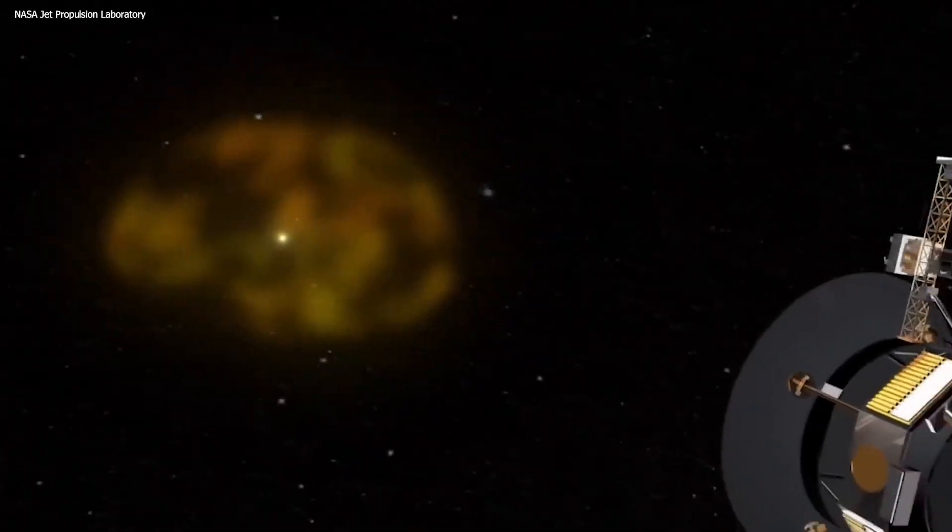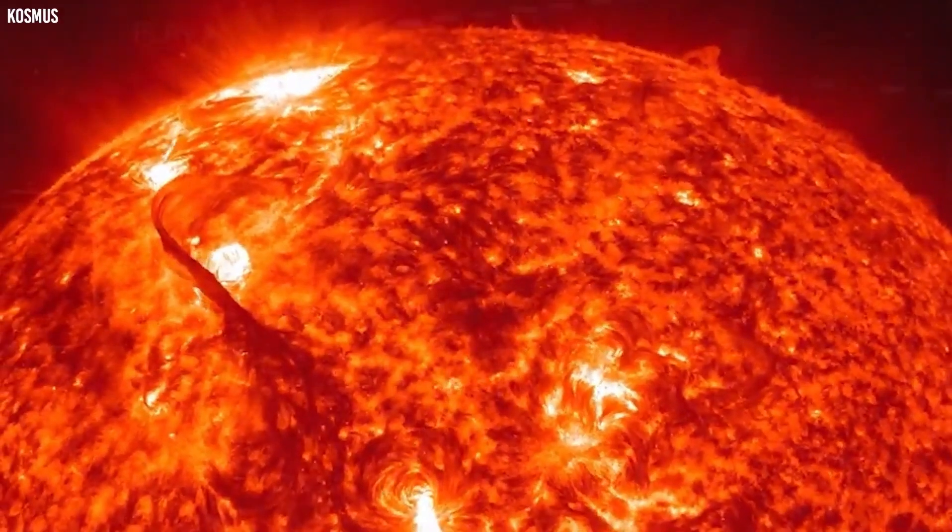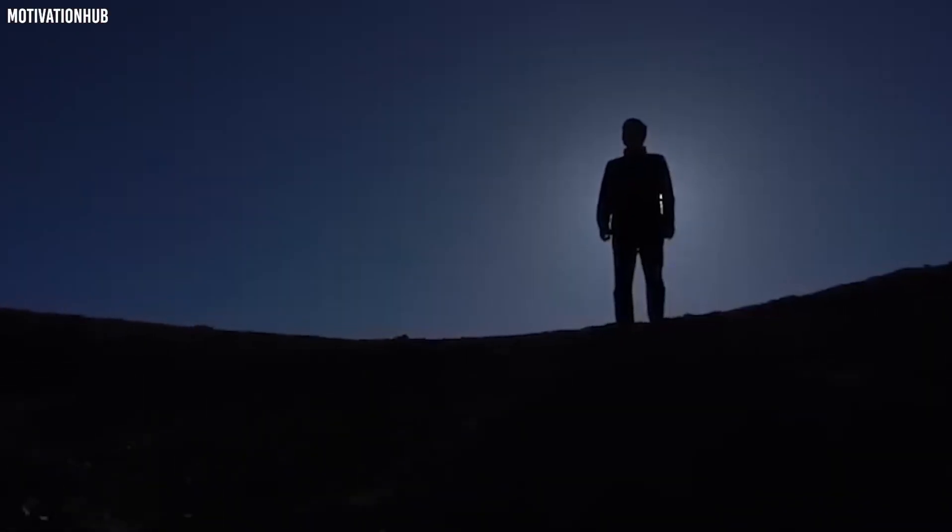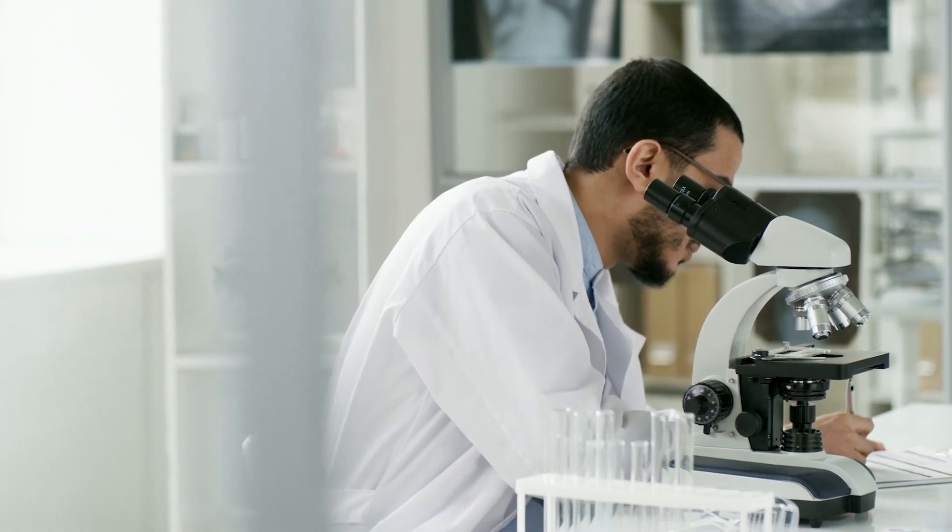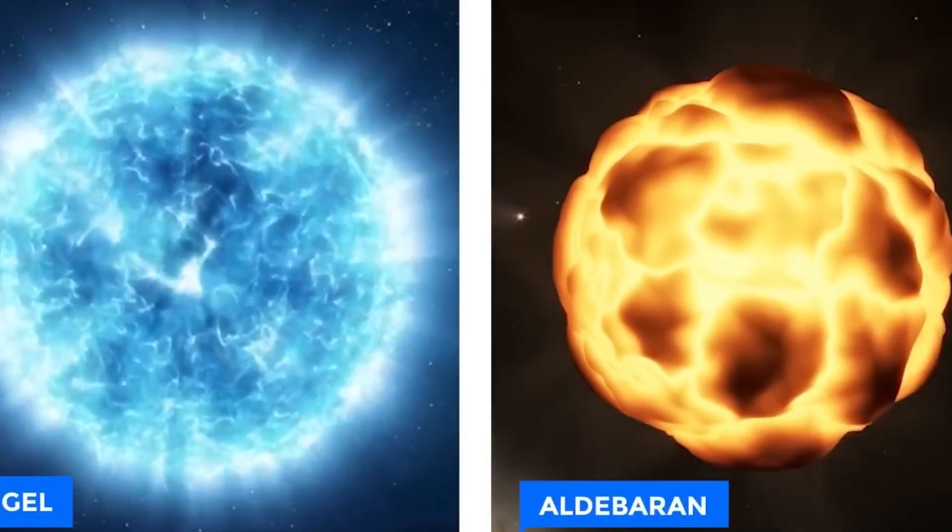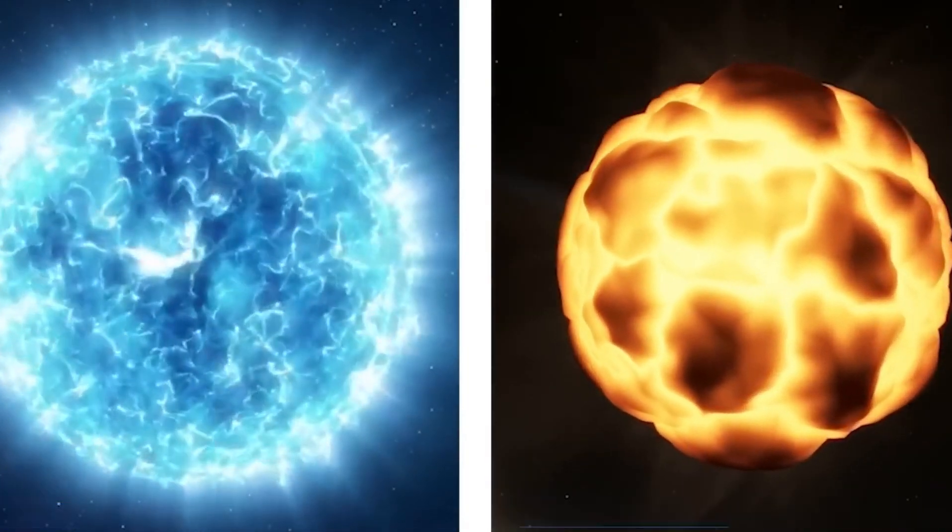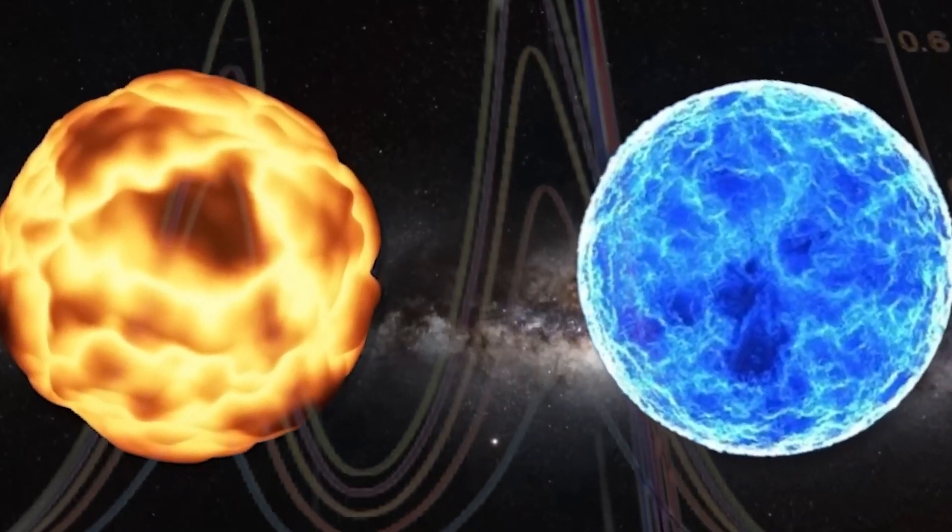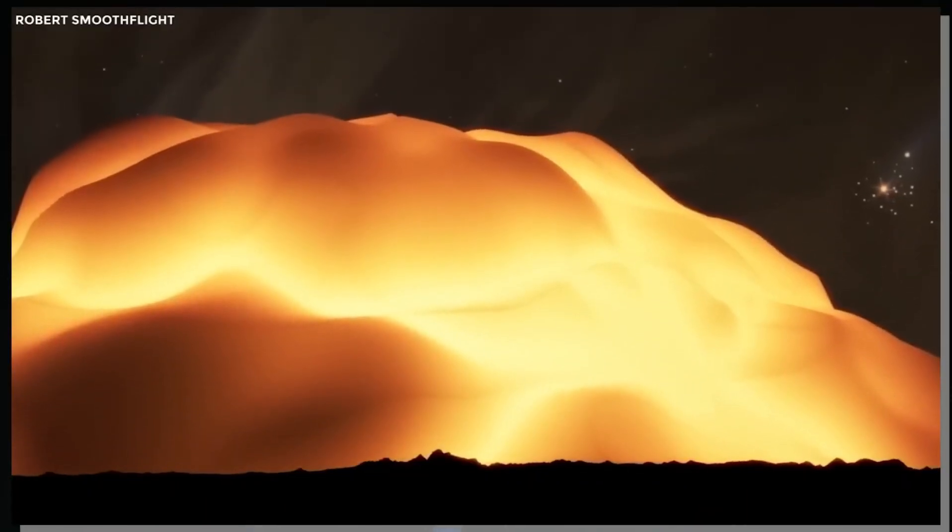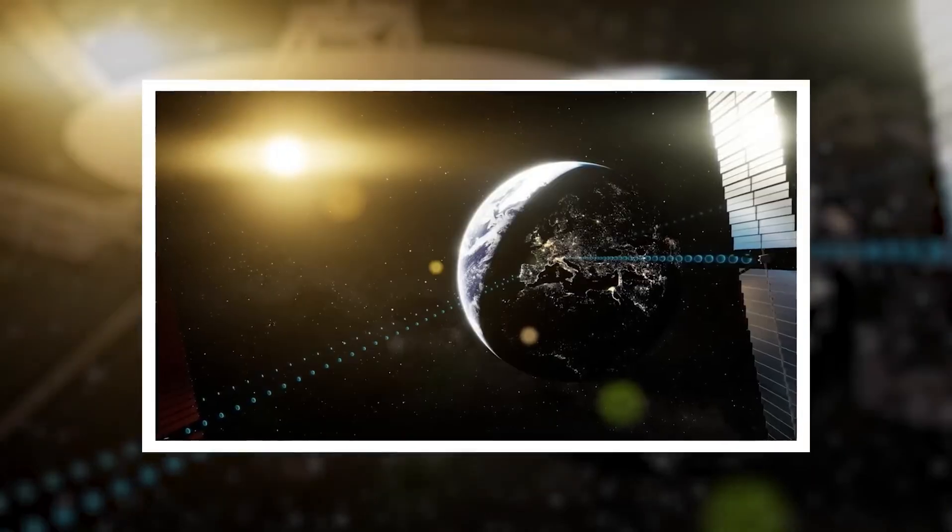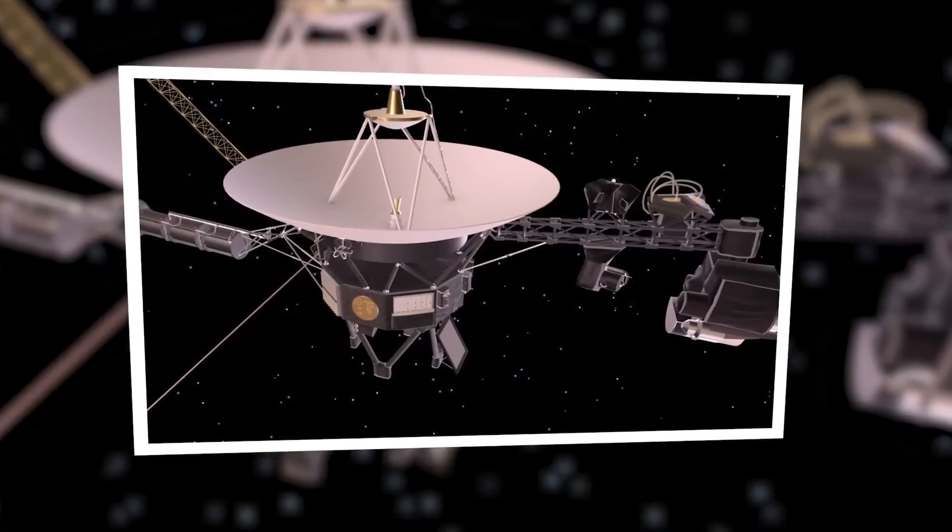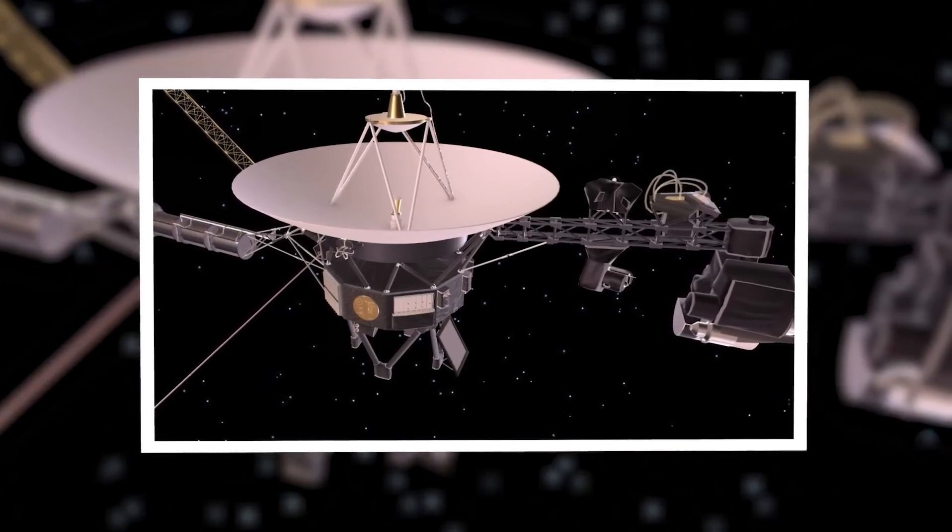Regarding the possibility of a Betelgeuse supernova, astronomers speculate that it could occur at any time within the next 10,000 to 100,000 years. Based on factors such as the star's color, brightness, size, and estimated age, scientists suggest that Betelgeuse is currently in the early stages of helium-to-carbon fusion. This process must continue through oxygen, silicon, and finally iron before the star's core collapses under its own gravitational pull, leading to a cataclysmic explosion.